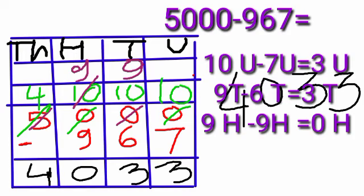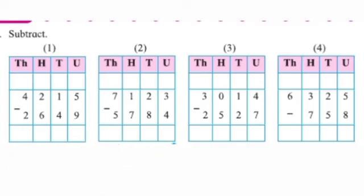9 tens are left. 10 units in the units place. 10 minus 7 equals 3 units. 9 hundreds minus 9 hundreds equals 0 hundreds. Next: 7123 minus 5784 is equal to 1339.